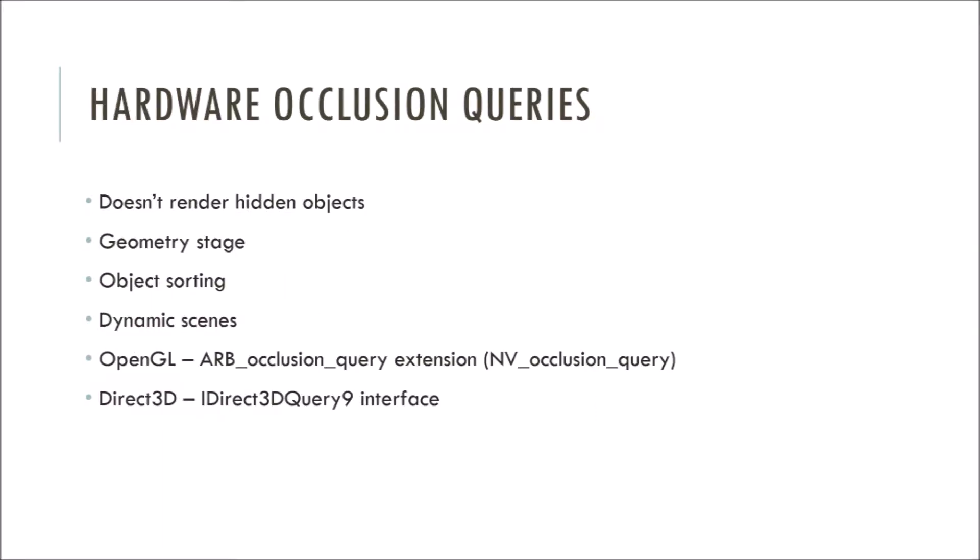The occlusion query feature lets us avoid rendering hidden objects. By skipping the entire rendering process for a hidden object, we can reduce the rendering load on the GPU. It rejects polygons at the geometry level and requires you to sort the objects from front to back. Hardware occlusion queries are appealing to today's games because they work in completely dynamic scenes. In OpenGL, the ARB Occlusion Query extension, which is based on NVIDIA's extension, implements the occlusion query idea on the GPU and fetches the query results. Microsoft has incorporated the same functionality since DirectX 9.